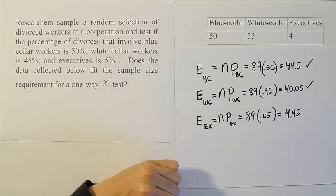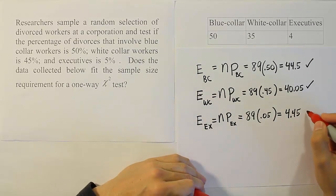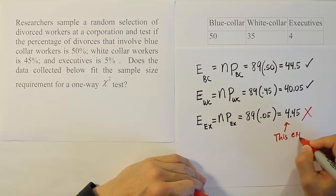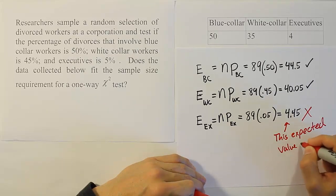And this is a problem. That number is too small. The expected value for each cell has to be 5 or larger. This expected value is too small.